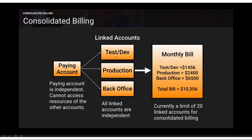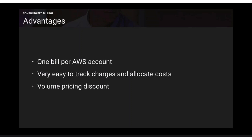The paying account can only retrieve billing information and cannot access resources of the other accounts. All linked accounts are independent — back office cannot access production and vice versa. Currently there is a limit of 20 linked accounts for consolidated billing, but that is a soft limit and you can ask AWS to increase it. The major advantage is one bill per month with easy cost tracking and volume pricing discounts.